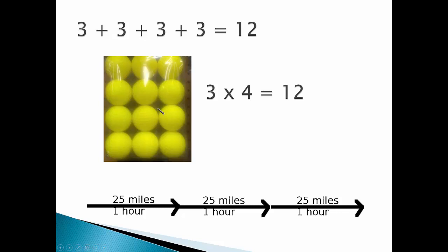Four rows of three golf balls gives us 12 golf balls. Riding 25 miles an hour for three hours will get us 75 miles down the road.